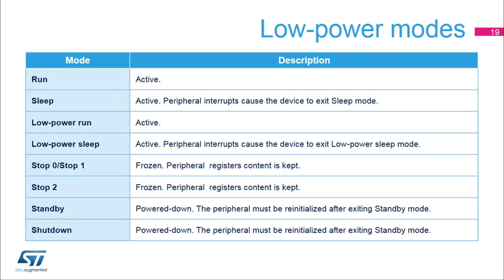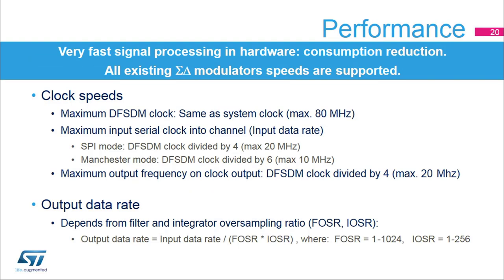The DF-SDM peripheral can be active only in run and sleep modes. In all other low-power modes, including stop, standby, and shutdown modes, the DF-SDM must be disabled. The DF-SDM allows operation at a maximum input data rate of 20 MHz in SPI mode or 10 MHz in Manchester mode. Parallel data inputs have the same performance, so parallel data can be put into DF-SDM at full 20 MHz speed using either the CPU or DMA.